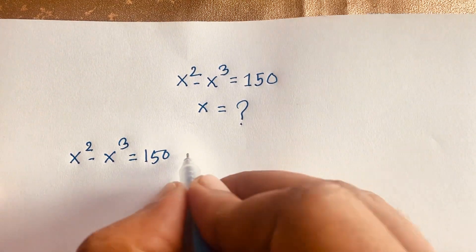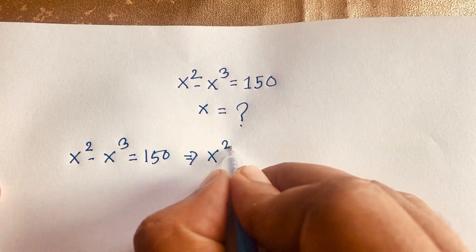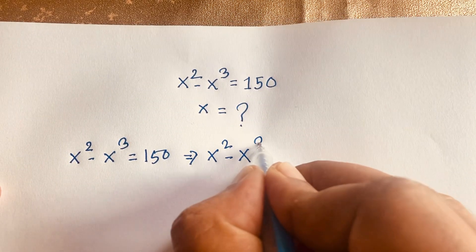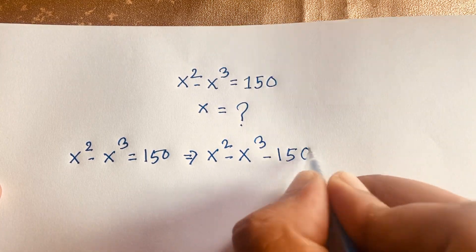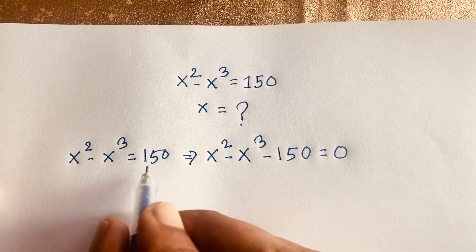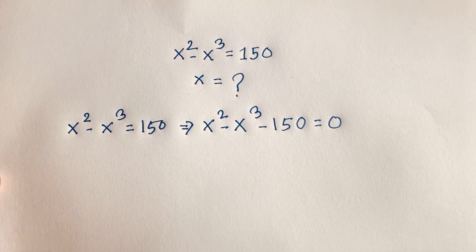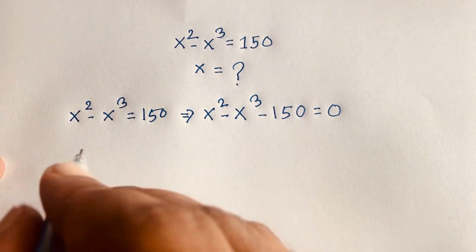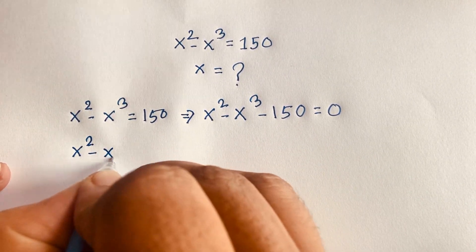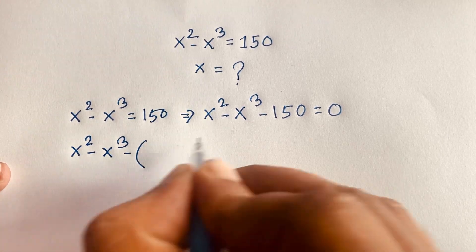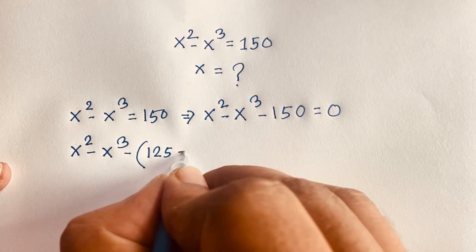Now, this equation becomes: x squared minus x cubed minus 150 is equal to 0. I just move this 150 to this side, making it negative 150. Then this equation becomes x squared minus x cubed minus 150, and we split 150 as 125 plus 25, so it becomes x squared minus x cubed minus 125 minus 25 equal to 0.